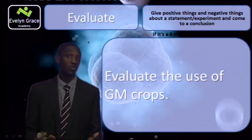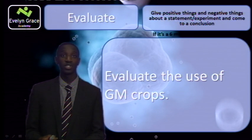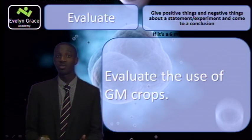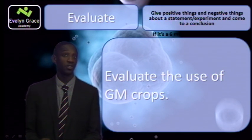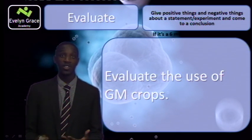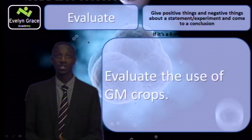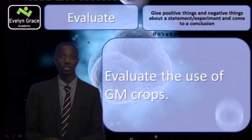You may say: I think we should use genetically modified crops because in terms of what they do to the environment, they do not damage the environment as much as human-made activities such as burning fossil fuels. That is your personal opinion placed at the end of the answer, where you've given both advantages and disadvantages and finished with a conclusion. That will get you your six marks.